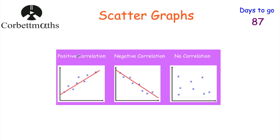In terms of correlation, we've got positive correlation — that's where as one value goes up another value goes up. For instance, temperature and ice cream sales: as the temperature goes up you'd expect more ice creams to be sold. Next, negative correlation means as one value goes up the other comes down — for instance temperature and jumpers sold: as temperature increases, fewer jumpers are sold. Finally, no correlation is when points are just scattered across the graph with no connection between them.